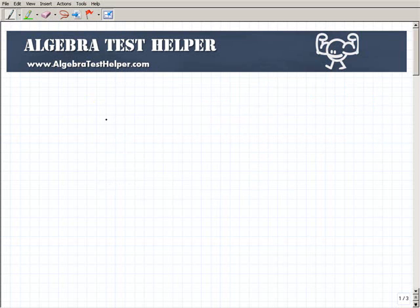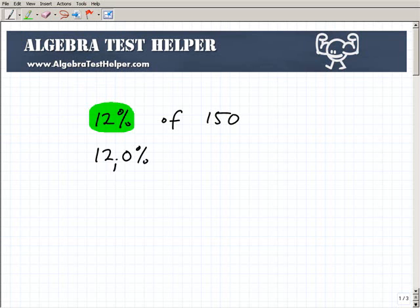All right, so how about, let's say, 12% of 150. So what's 12% of 150? Remember, the first thing we have to do is take the percent and write it as a decimal. All right, so that's 12.0%, if you will. And we're going to move the decimal point two spaces to the left. So that's 0.12. And then we're going to multiply by this number, the number we're trying to find a percent of.